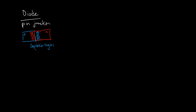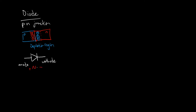This depletion region determines the characteristics of the diode. It's the thing you have to overcome to turn it on, and it's the thing that blocks current from flowing in the opposite direction. At the circuit level, we draw a diode as a triangle with a line. On one side we have the cathode, on the other side the anode. Positive current comes out of the cathode. We can apply some voltage across this device, VD, and there's some current through it, ID.